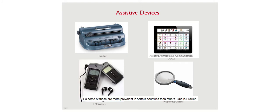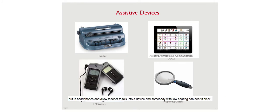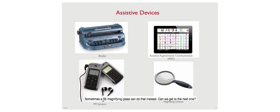Some technologies currently available: a Brailler, which is essentially a typewriter that types out Braille. Augmentative and alternative communication devices - an iPad or even pieces of paper - where children can point to symbols to help them communicate. An FM system, where the teacher talks into a device and someone with low hearing can hear it clearly - an alternative if hearing aids aren't available. And magnifying glasses, where a $5 magnifying glass can often serve instead of expensive large print materials.